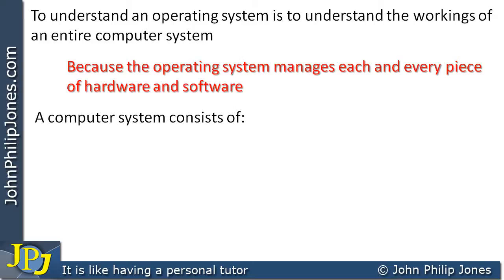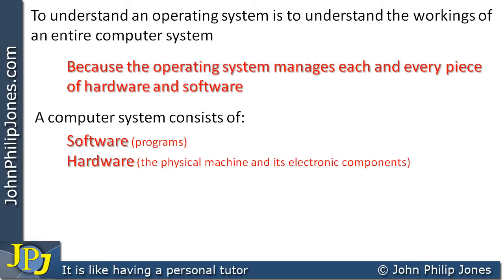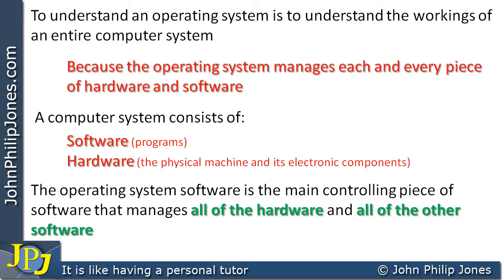A computer system consists of software — programs, spreadsheets, databases, computer games, whatever they may be — as well as the hardware: the physical machine and its electronic components. All of the devices connected to a computer form the hardware of that computer system. The operating system is the main controlling piece of software that manages all of the hardware and all of the other software.